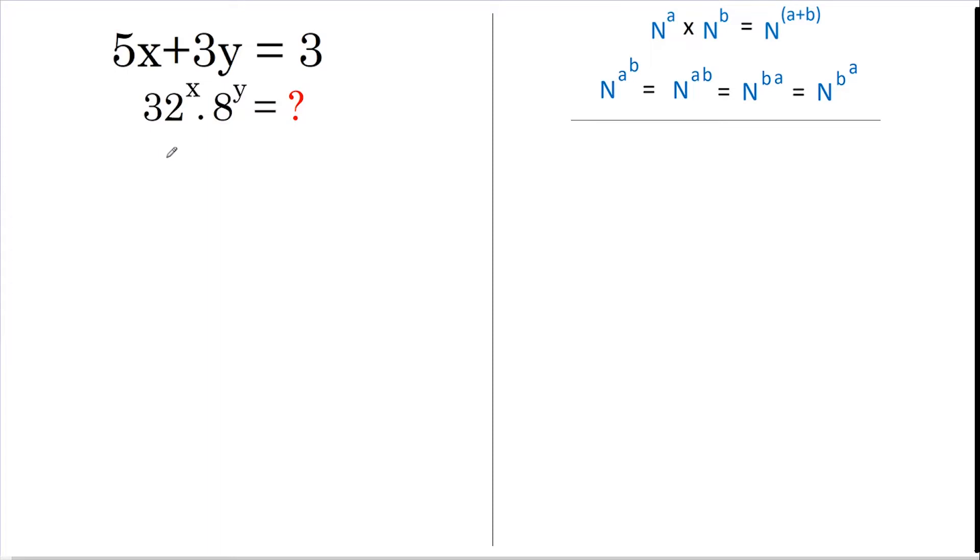In fact, 32 is 2 to the power of 5 and 8 is 2 to the power of 3. Above we have a 5 and a 3, so that gives me a clue as to what I'm going to do here.